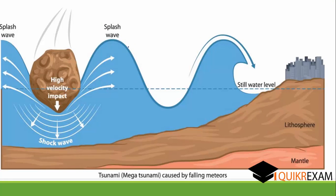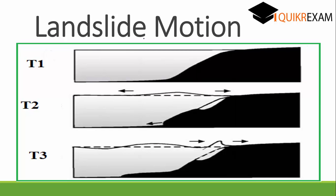The next reason is a mega tsunami. A mega tsunami happens due to meteoroids — when any meteoroid from the sky falls on the sea, it generates high waves, and when these waves travel toward the harbour, it results in a tsunami.